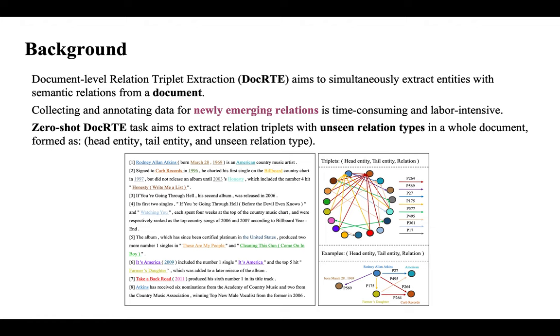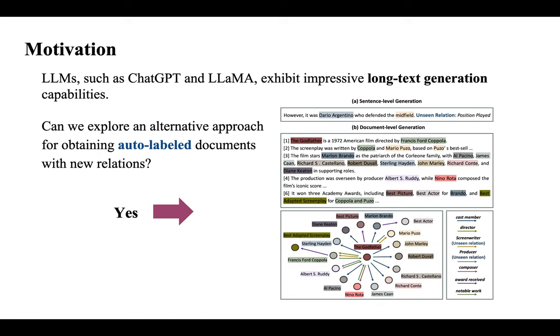So in this work, we propose the zero-shot setting in document-level relation triplet extraction task, which aims to extract relation triplets with unseen relation types in a whole document.